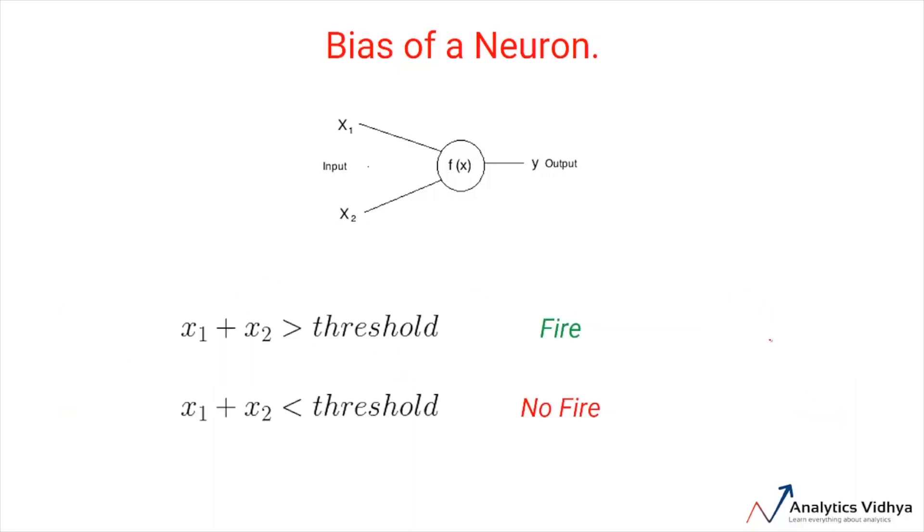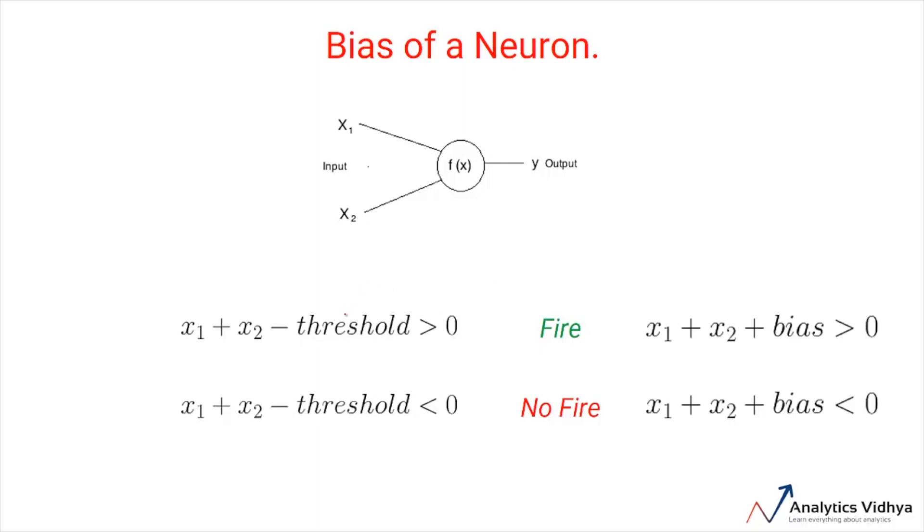We can represent the firing and the non-firing condition of a neuron using these equations. If sum of the inputs is greater than the threshold, then the neuron will fire. Otherwise, the neuron will not fire. Let's simplify this equation and bring the threshold to the left side. Now, this negative threshold is called bias.